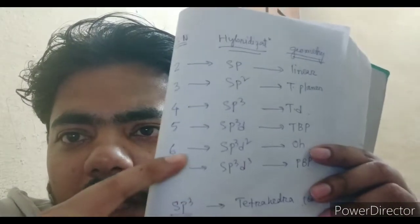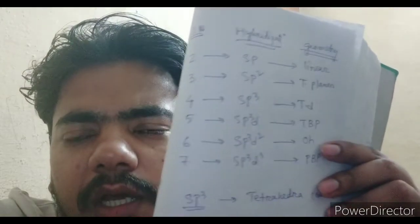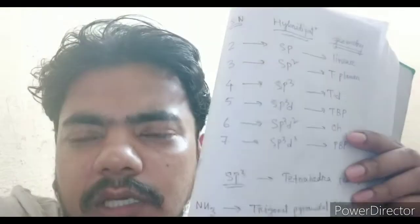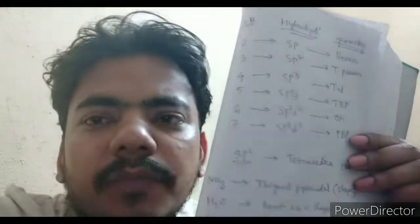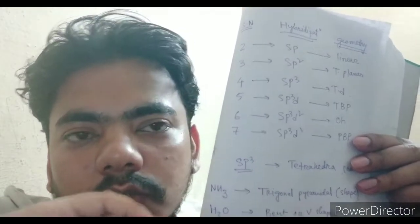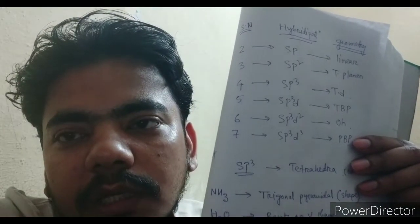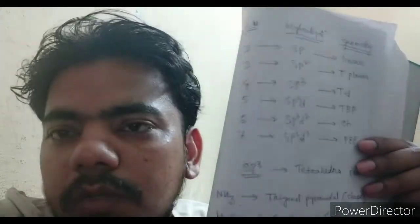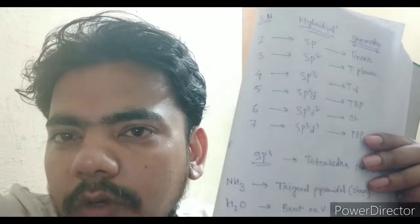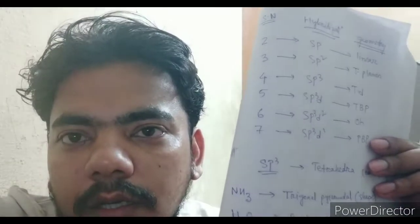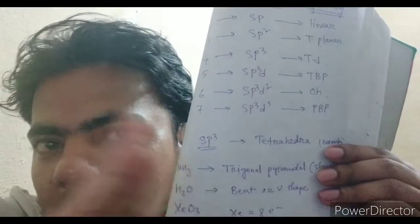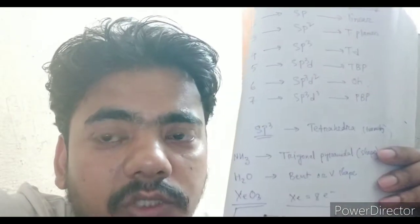For octahedral, all bond angles are 90 degrees. For pentagonal bipyramidal, five bonds are in the plane. Dividing 360 degrees by five gives 72 degrees among equatorial bonds, and equatorial-to-axial is always 90 degrees. These types of questions may be asked — given different hybridizations, which compound has the highest or lowest bond angle.